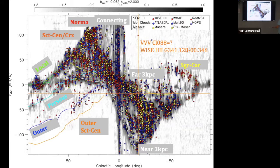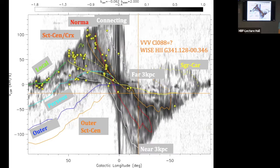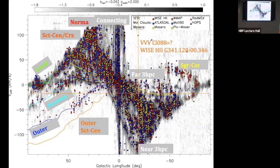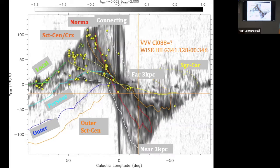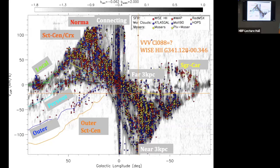This shows everything I've found that's useful: red points are different kinds of tracers of star formation, blue points are different types of molecular cloud surveys, and yellow points are masers — stars are the ones with parallaxes. I'll blink it — they do sort of follow the loci. So again, the patterns persist. The patterns are always there. We just have to understand them.